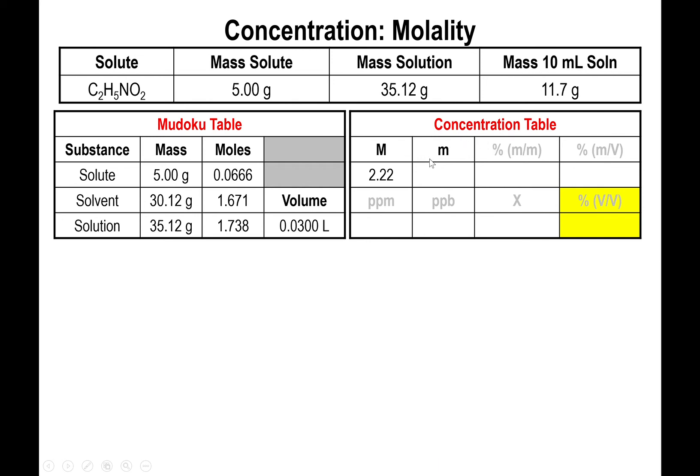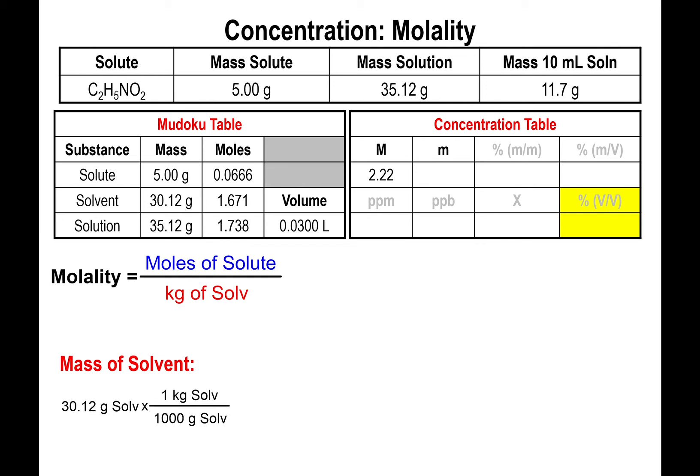Now, the next thing is known as molality. And the molality has the symbol little m. Molality stands for moles of solute over kilograms of solvent. Now, this one is the tricky one. So the mass of the solvent, well, we already have that. The mass of the solvent is 30.12 grams. But we need to convert that to kilograms. So we're going to divide this by 1,000 to get it to kilograms. And it's important that you don't forget to do this. Otherwise, your molality is going to be way off. It's going to be off by a factor of 1,000. Alright, but now that we have the kilograms of solvent, we simply plug in the moles of the solute, 0.0666, by the kilograms of solvent, 0.03012. And we find out the molality, which is abbreviated with little m after the number, 2.21.